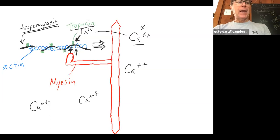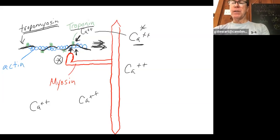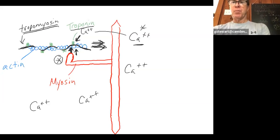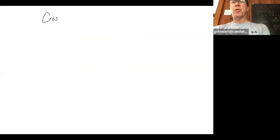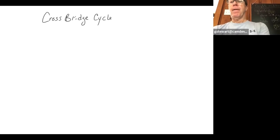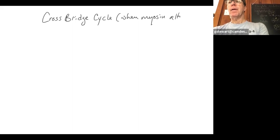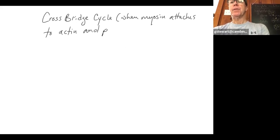The last complicated bit of this story: where does the myosin head get its energy to pull actin? When myosin binds to actin, that's called forming a cross bridge. What your book calls the cross-bridge cycle is when myosin attaches to actin and pulls it toward the M line.